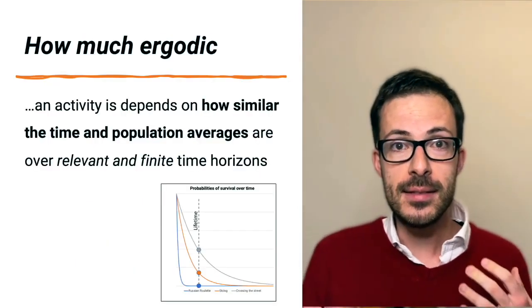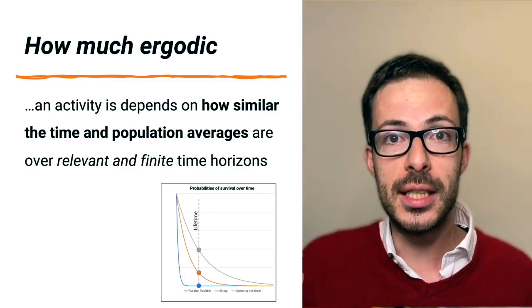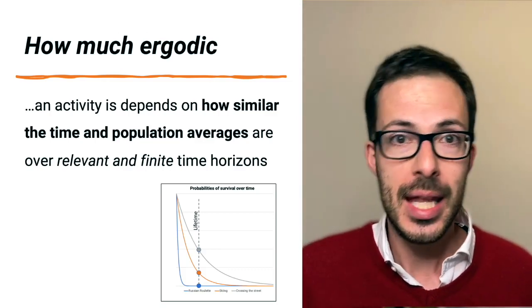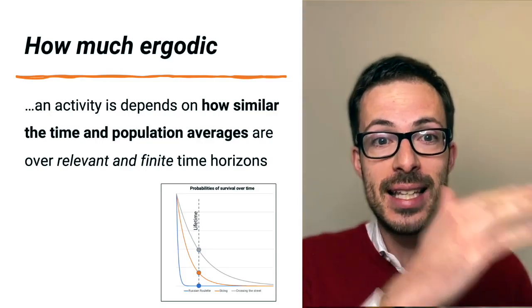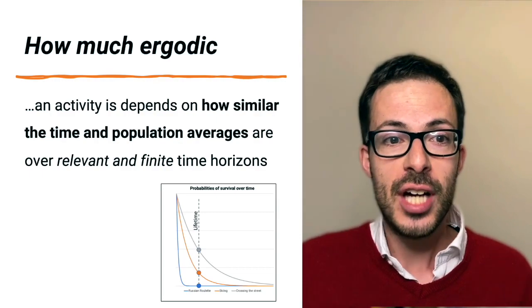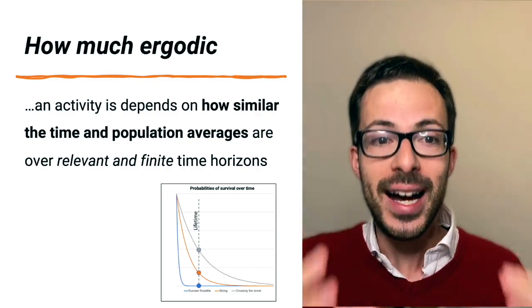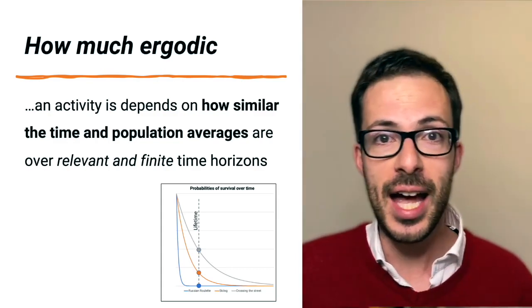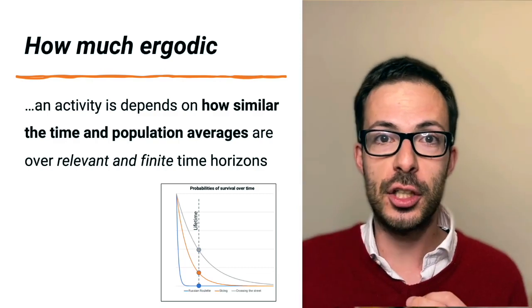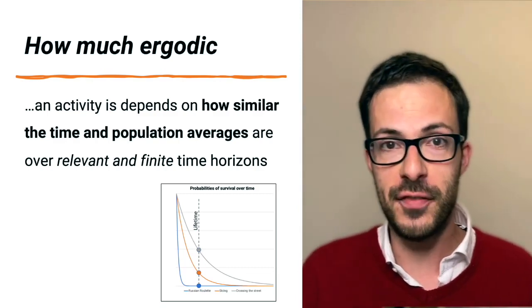Therefore, it makes sense of asking ourselves questions such as, how much ergodic is an activity? And the answer is, it depends on how similar the time average and the population average are over relevant and finite time horizons, for example, a career, a lifetime, or the duration of a relationship or the duration of an investment.